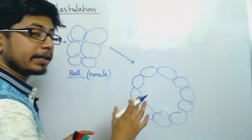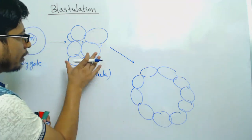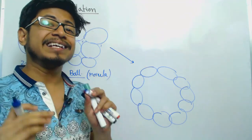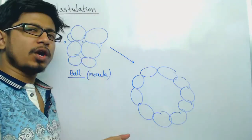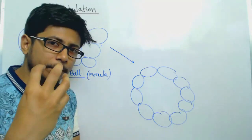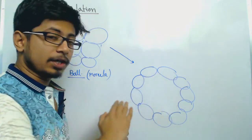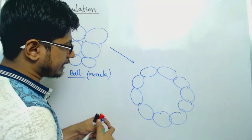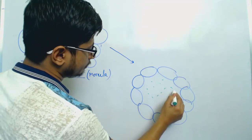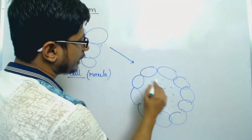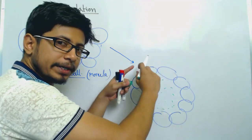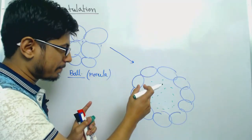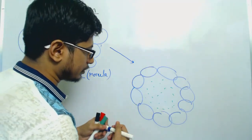Remember, all the structures we are looking at are not two-dimensional — they are three-dimensional. Think of morula as a rigid ball, and blastula as a hollow ball. If you make a cross section, in the center you will see a fluid-filled cavity, and the cells separate and create a membrane-like structure surrounding it. This stage is known as the blastula.